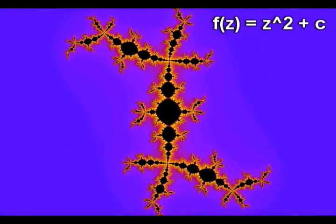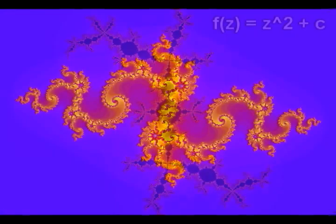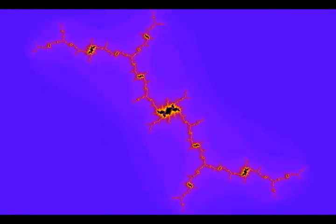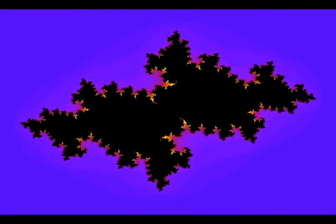So every single Julia set corresponds uniquely to some complex number, and since there are infinitely many complex numbers that we could be adding, there are also infinitely many Julia sets. Now, as mathematicians were looking at these examples of the Julia sets, they noticed that there are basically two easily distinguishable groups that every single Julia set falls in.